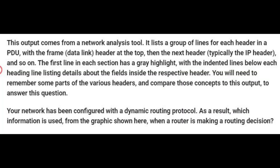This is the first question. This output comes from a network analysis tool. It lists a group of lines for each header in a PDU, with the frame or data link header at the top, then the next header — typically the IP header — and so on. The first line in each section has a gray highlight, with the indented lines below listing details about the fields inside the respective header. You will need to remember some parts of the various headers and compare those concepts to this output to answer this question.